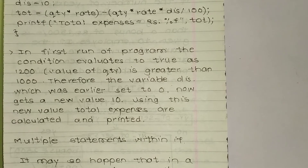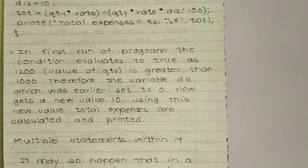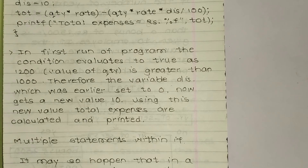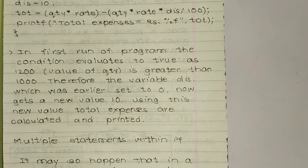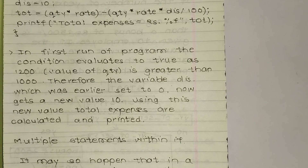Total expenses are calculated. This program is about the if statement — taking a decision with respect to the value entered and applying changes in calculations. That is, either zero percent discount or ten percent discount. The new value of total expenses is calculated and printed. This was an example of an if statement.